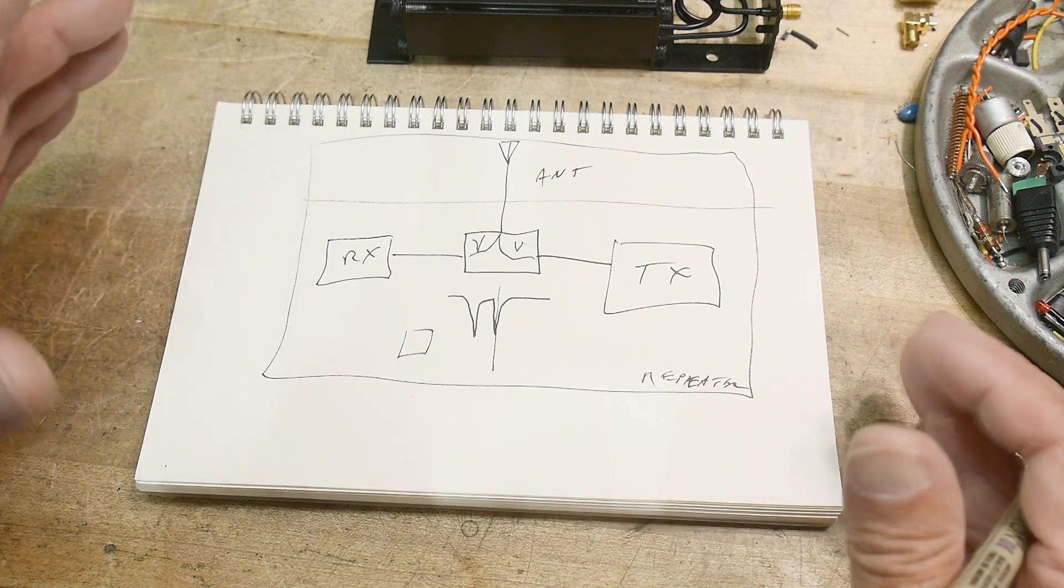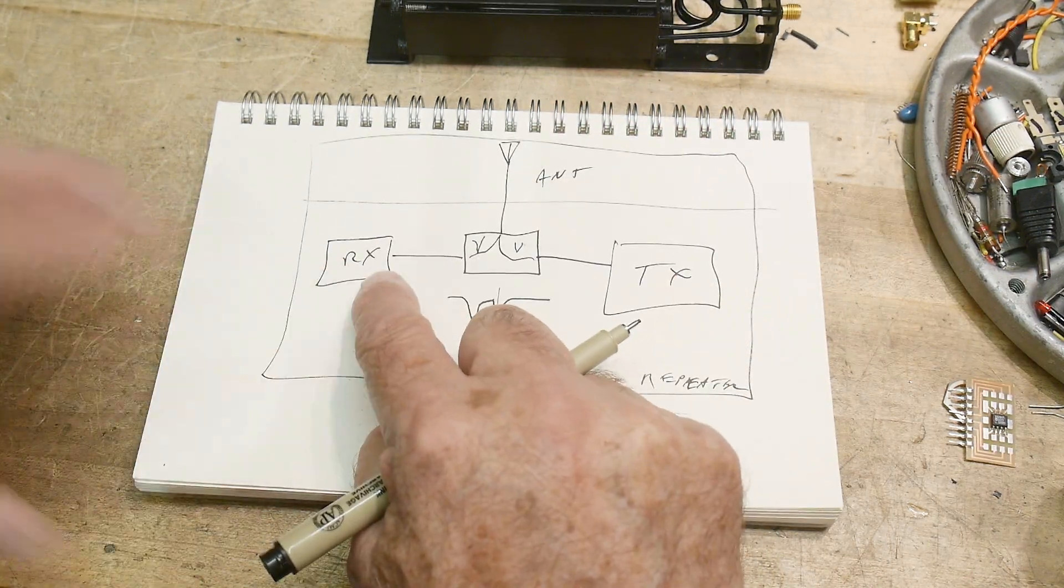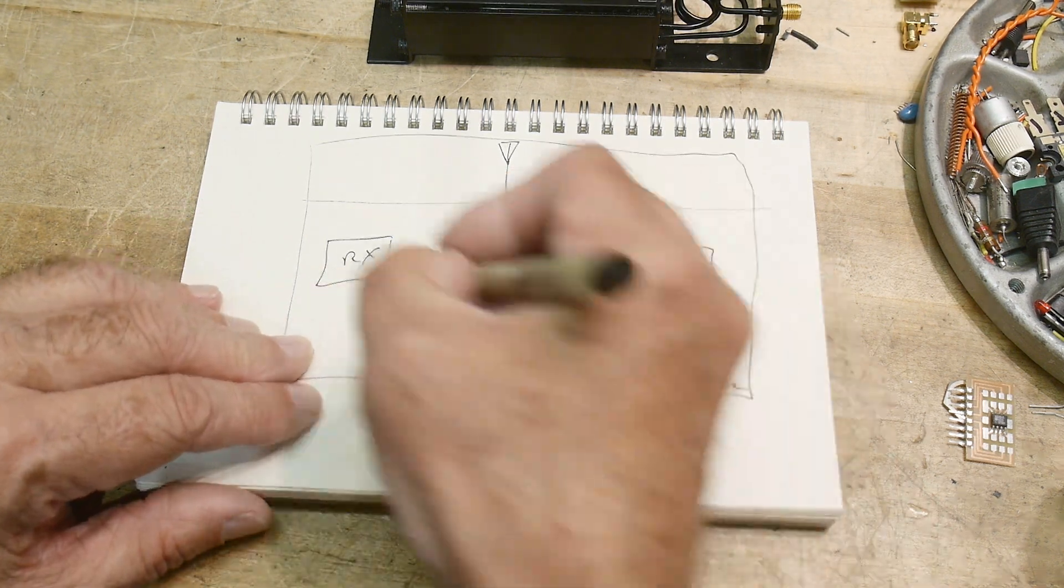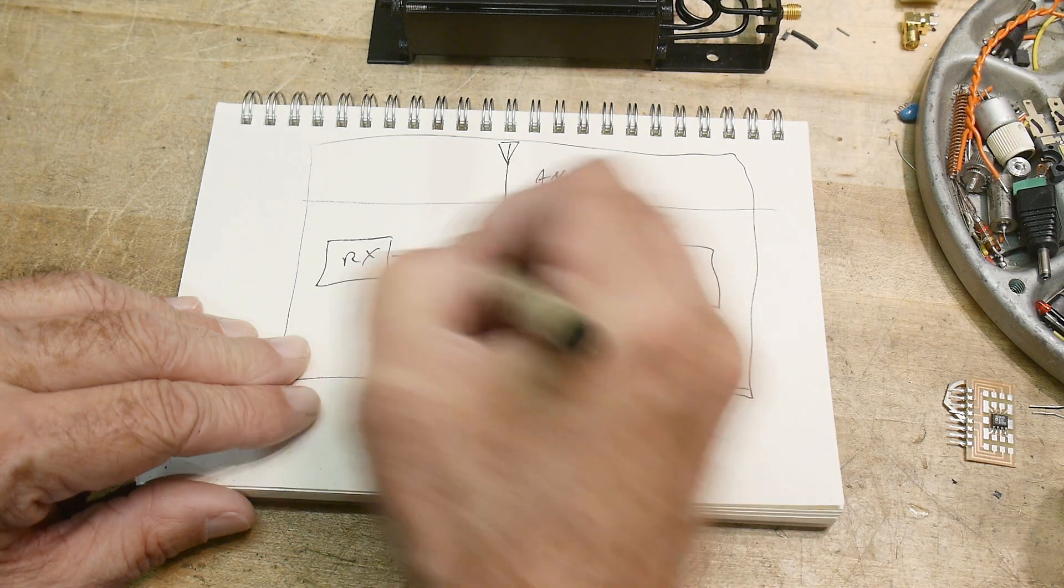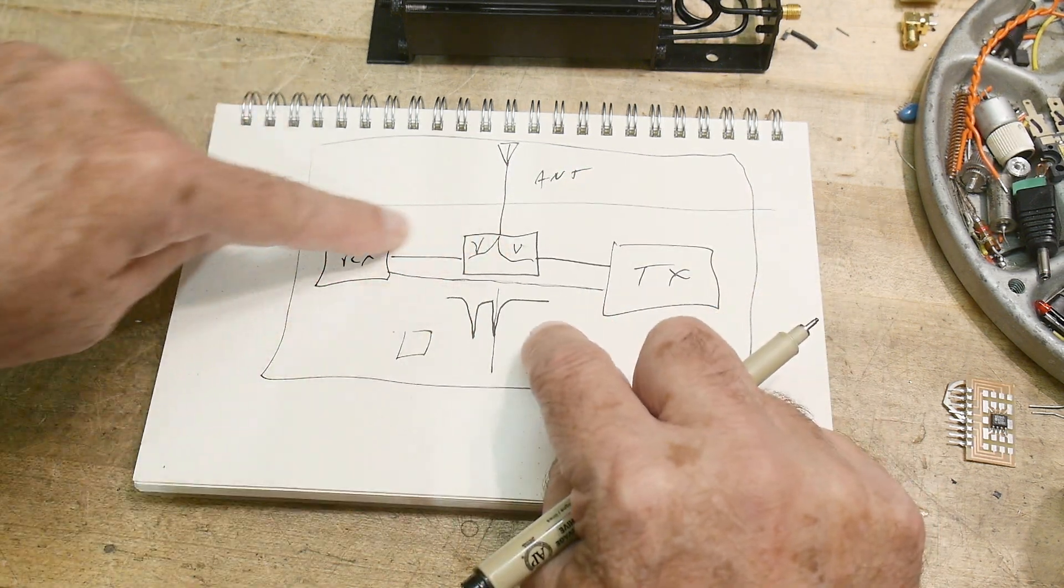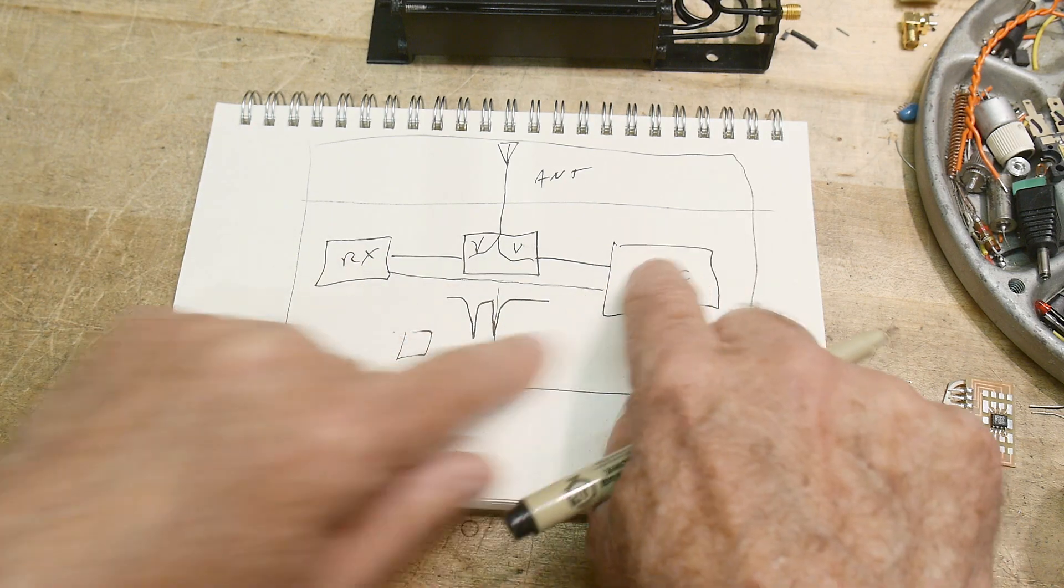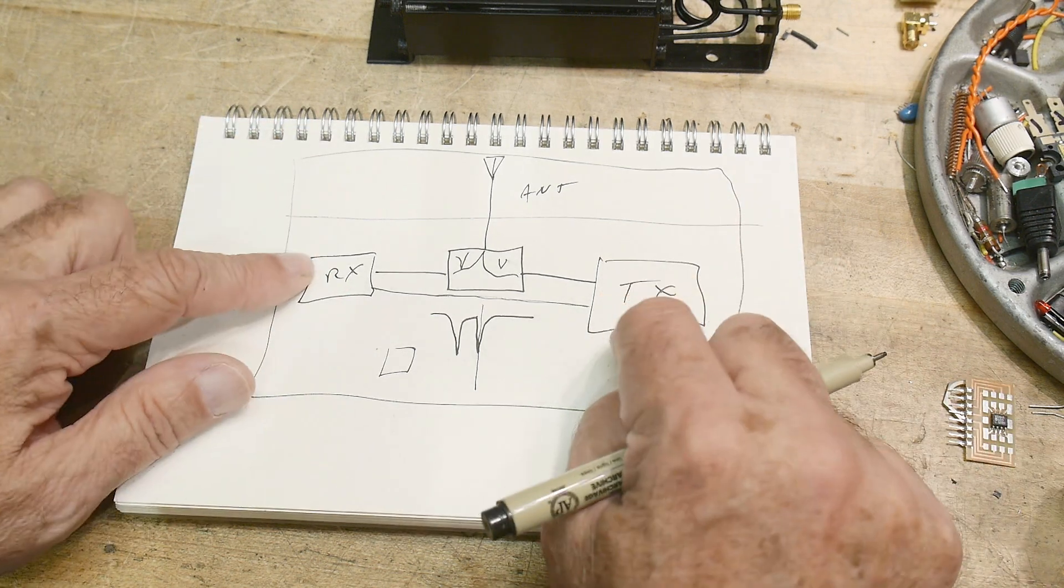So whenever it hears something it automatically starts transmitting. So there's a wire that goes between the receiver and the transmitter. So the receiver hears the audio, sends the audio to the transmitter and then the transmitter retransmits it. And these two things are 5 megahertz apart.